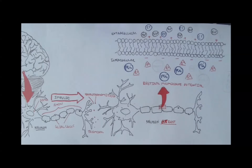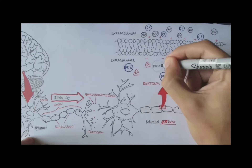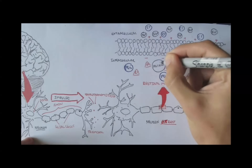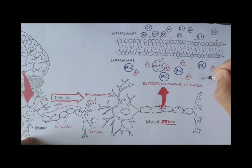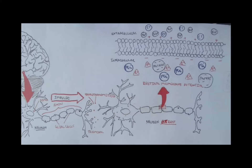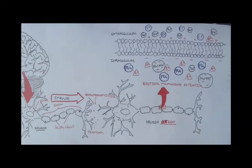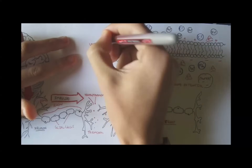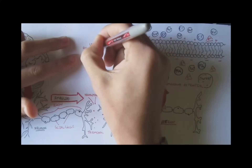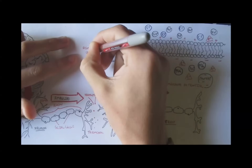Now there are of course some sodiums inside the cell, and there are some potassiums outside the cell. This distribution of ions — this different distribution of ions — is what makes up the membrane potential at rest, the resting membrane potential.